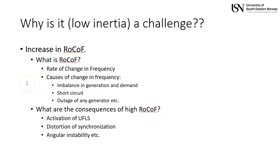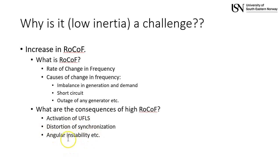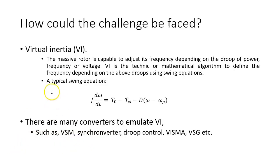The second question: why is low inertia a challenge? The reason is the increase in RoCoF — the Rate of Change of Frequency. As inertia decreases, RoCoF increases. If the power system is subjected to any transient event — for example, imbalance in generation and demand, short circuit, or outage of a generator — the frequency changes. If the rate of change exceeds a certain limit, it activates UFLS (Under Frequency Load Shedding), causes distortion of synchronization, or angular instability.